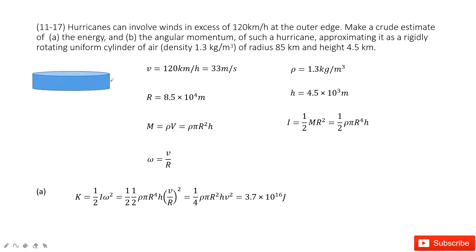For the cylinder of air, the velocity at the edge is given as V. We convert the unit to meters per second. The density for the air is given, and the edge radius R is given.